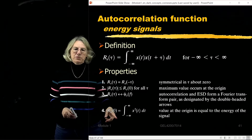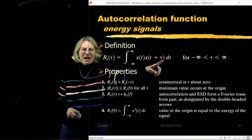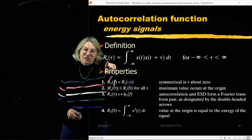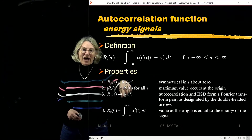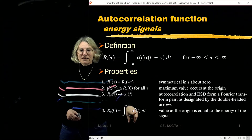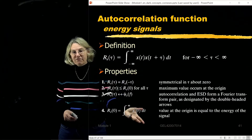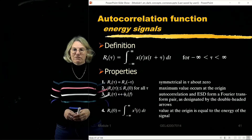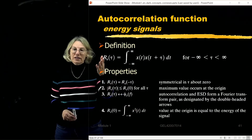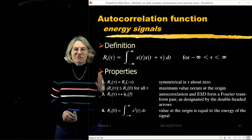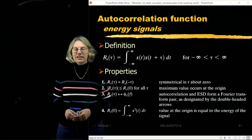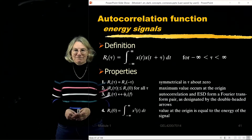The last property is that if I put tau equals 0 in the autocorrelation expression, I get x squared, which by definition is the energy of the signal. So the autocorrelation function at the origin is equal to the energy of the signal.